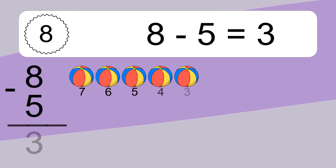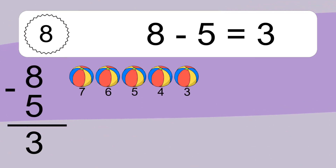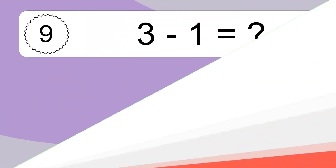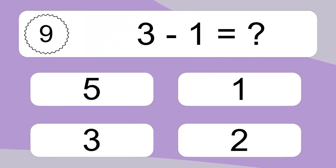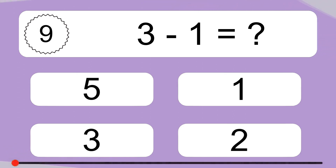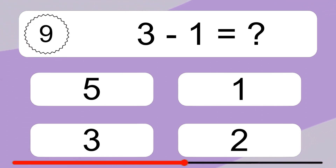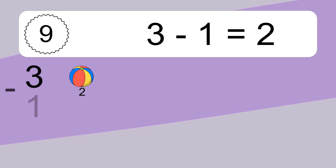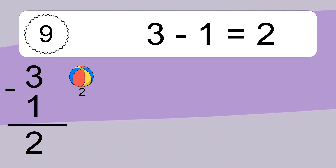8 minus 5 equals 3. Let's count it: 7, 6, 5, 4, 3. 3 minus 1 equals what? 3 minus 1 equals 2. Let's count it: 2.